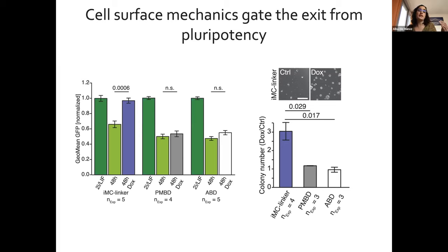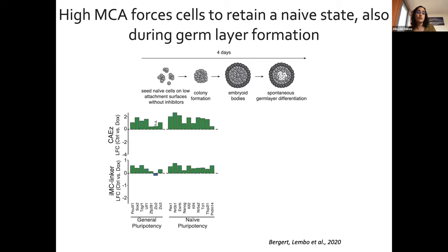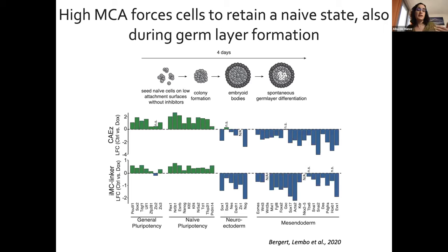This is why we state that membrane-to-cortex attachment is a gate for the exit from pluripotency. When we tried to decrease it, we couldn't speed up exit — a network of transcription factors must also change. So it's a gate, not a door. We also tested whether this applies to other developmental stages by growing embryoid bodies, where cells spontaneously differentiate to form the three germ layers, tracked by RNA sequencing. Even in this complex system, expressing constitutively active ezrin or the IMC linker increases pluripotency gene expression and decreases differentiation markers in neuroectoderm or mesendoderm.